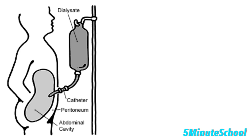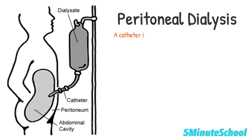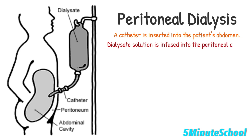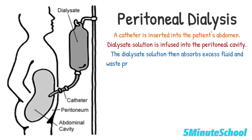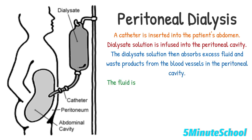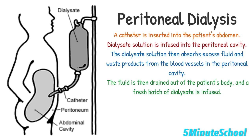In peritoneal dialysis, a catheter is inserted into the patient's abdomen and a dialysate solution is infused into the peritoneal cavity. The dialysate solution then absorbs excess fluid and waste products from the blood vessels in the peritoneal cavity.